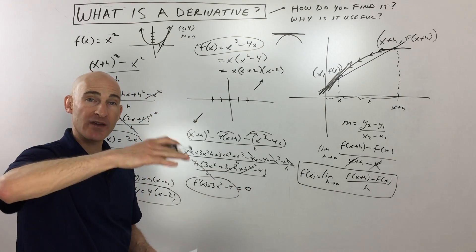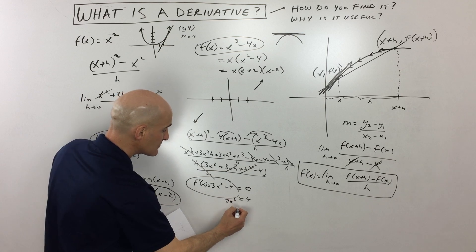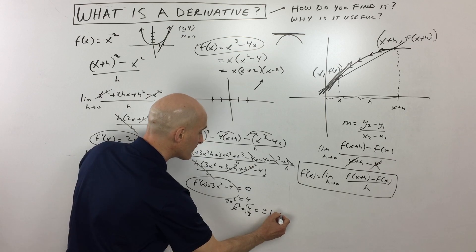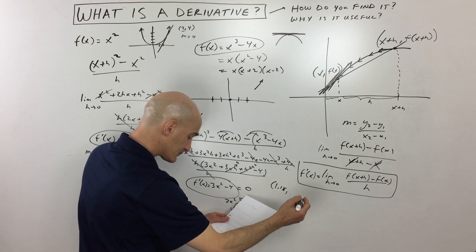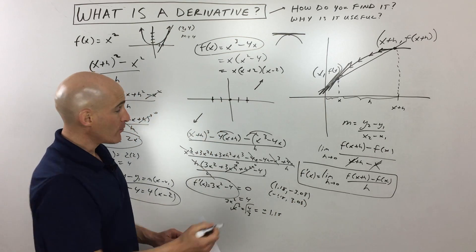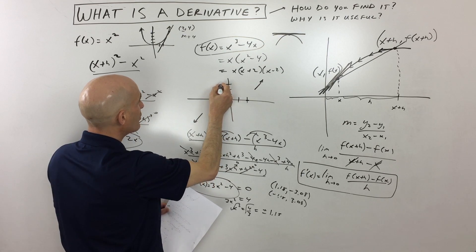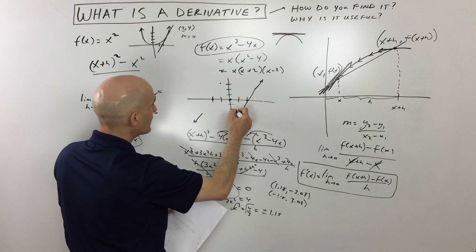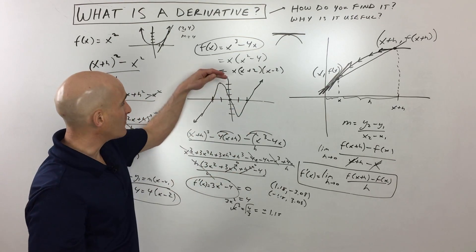We want to find where that slope is zero — that's where the graph is turning around or bending. We set 3x squared minus 4 equal to zero. Adding 4 to both sides: 3x squared equals 4. Dividing both sides by 3: x squared equals 4 thirds. Taking the square root: x equals plus or minus 1.15. If we put 1.15 back into the original equation, we get the point (1.15, negative 3.08), and putting in negative 1.15 gives us (negative 1.15, positive 3.08). So those are our turning points, giving us a precise idea of how high and how low the graph goes.